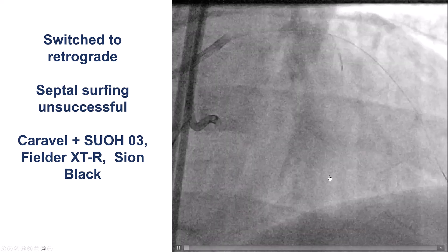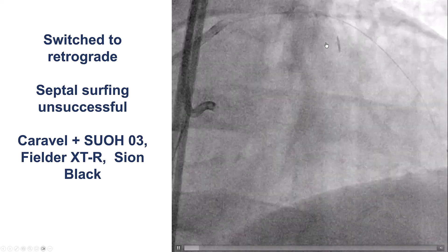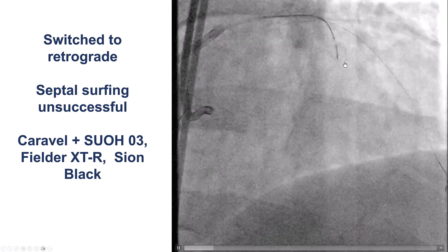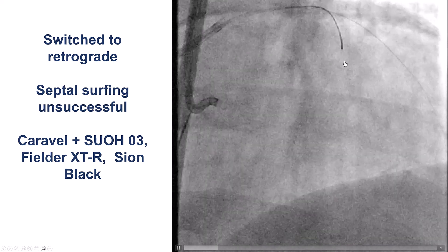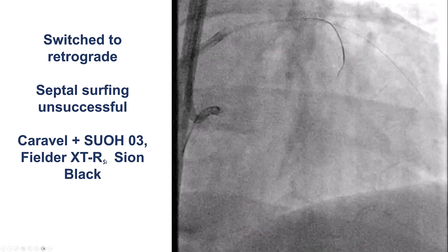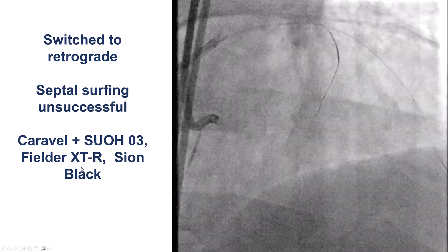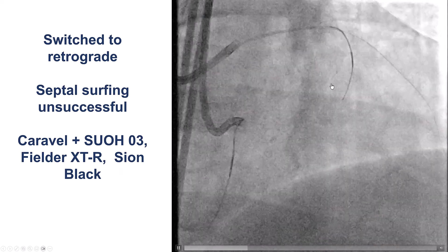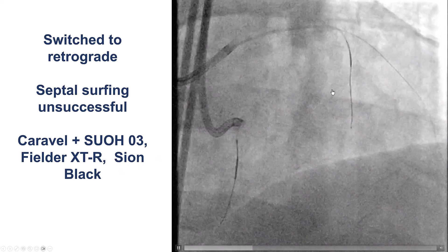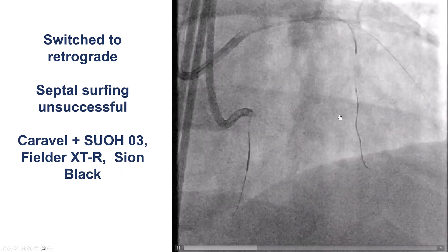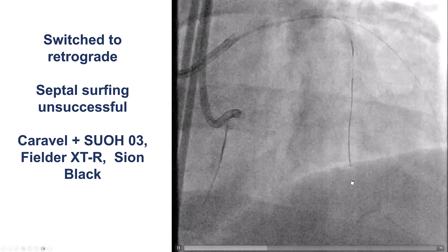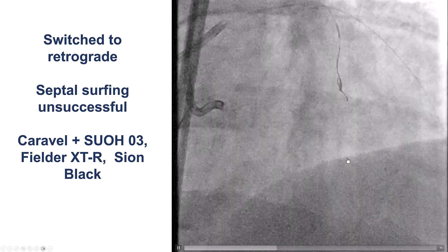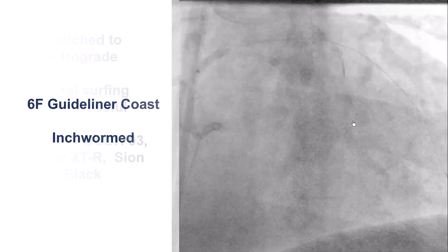We decided to switch to the retrograde approach. We tried to wire several of the septal connections using various wires — 203, Fielder XTR, Confianza — but unfortunately we were unable to cross through the septals. We got close, but there was never a crossing into the posterior descending artery.